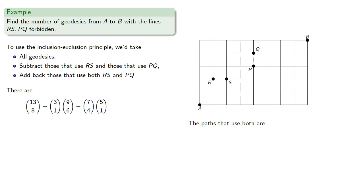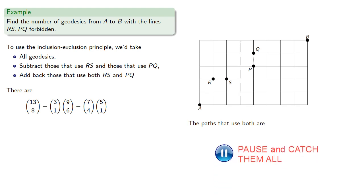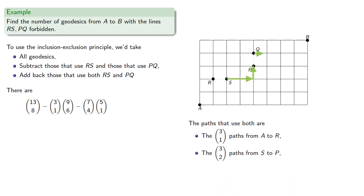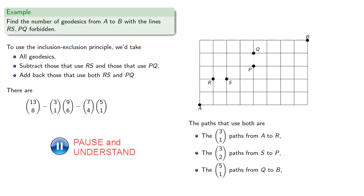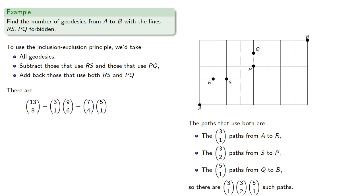Now we have to add back in the paths that use both. We can multiply these together to find the number of geodesics that pass through both of the prohibited edges, and we'll add those back in to get the number of geodesics between A and B that do not use RS or PQ.